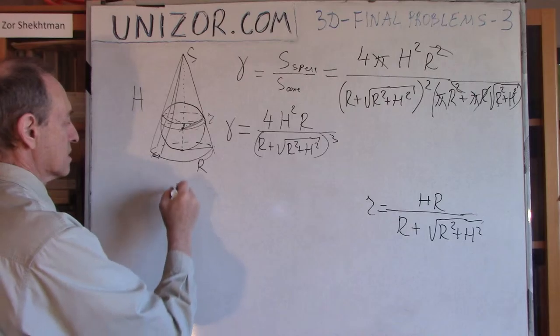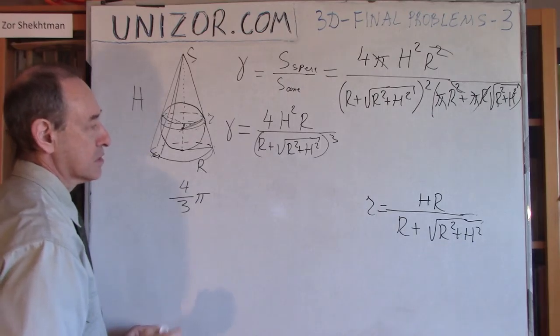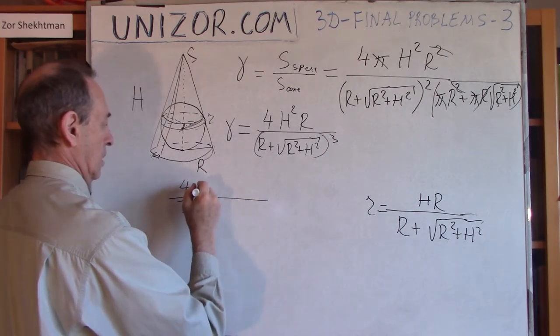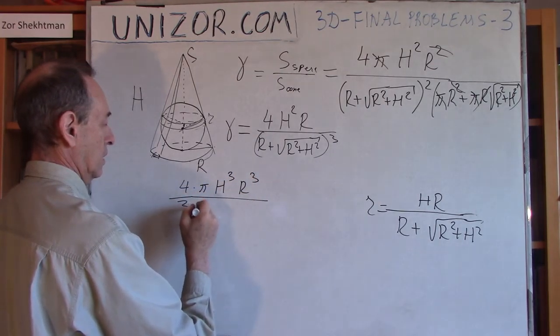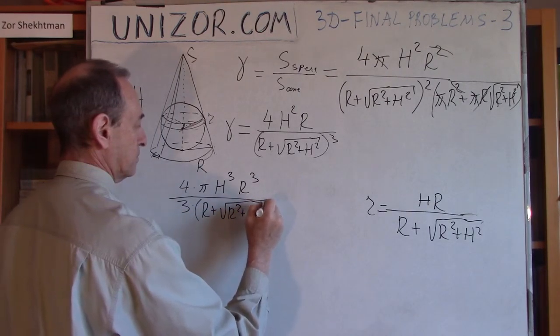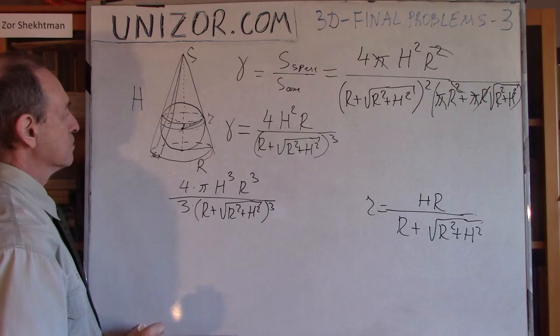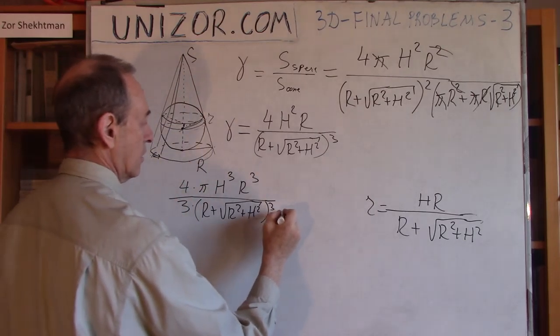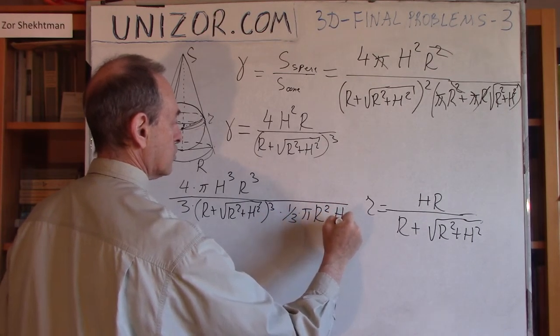The volume of a sphere is 4/3 π times the radius cubed, which is this. Let me do it this way: 4/3 π H³R³ divided by (R + √(R² + H²))³. Divide by the volume of the cone, which is 1/3 area of the base times altitude, so it's 1/3 πR²H.